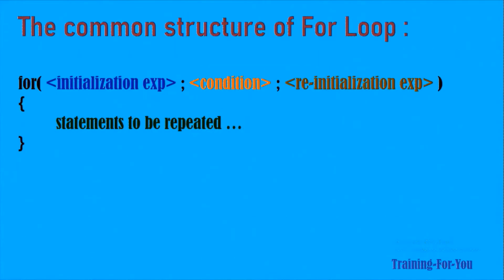The common structure of for loop is like this: for is followed by within parenthesis initialization expression, then semicolon, then the condition, then the re-initialization expression, and this is the loop body.